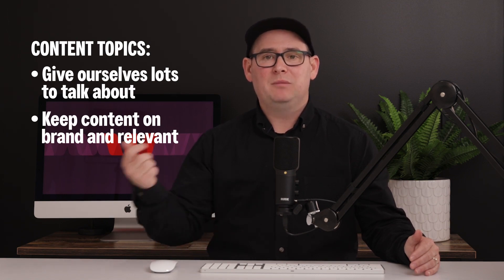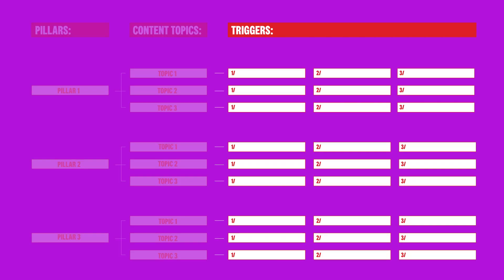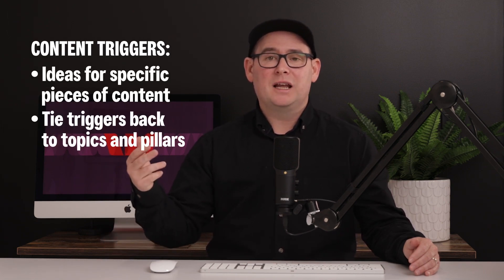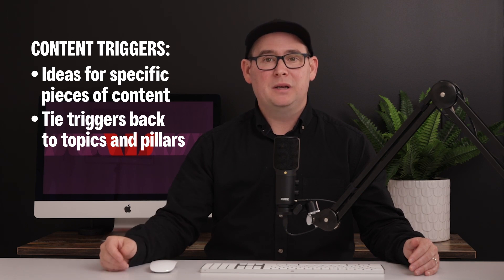Content triggers are where we get down to the specific ideas for content — hence the name triggers. This is where we do most of our brainstorming. As long as a trigger relates back to a topic and then back to one of our pillars, we can sense-check that this idea is right for our content calendar.